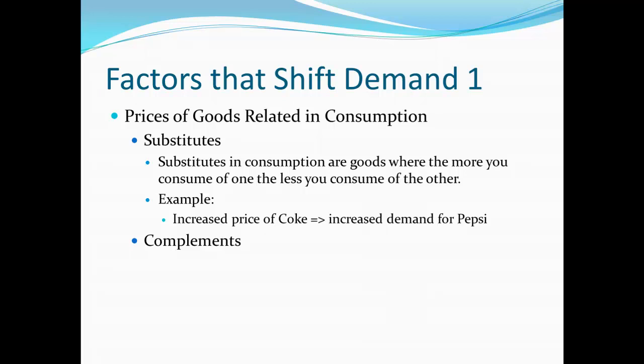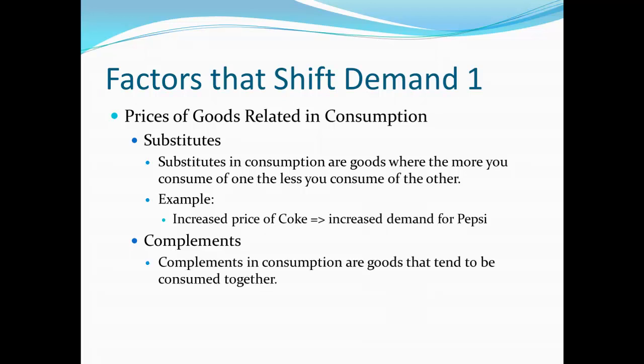With complements, it's the same term used in production and a similar concept. While complements in production are things produced together, complements in consumption are goods that tend to be consumed together. Some things are very strong complements, like left shoes and right shoes — we consume them together virtually all the time. Some are weaker complements, like hot dogs and ketchup, which tend to go together but not always. People tend to consume more of one if they're consuming more of the other.